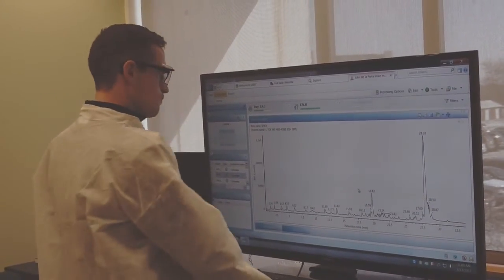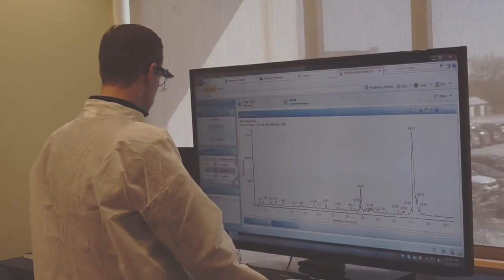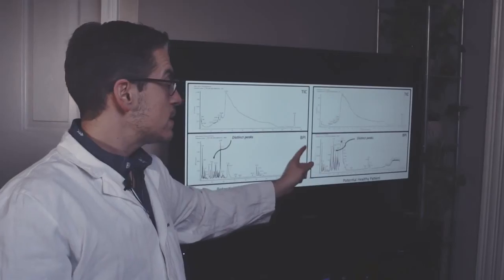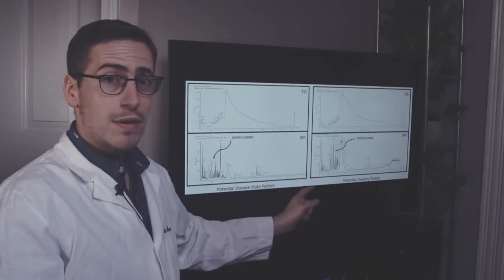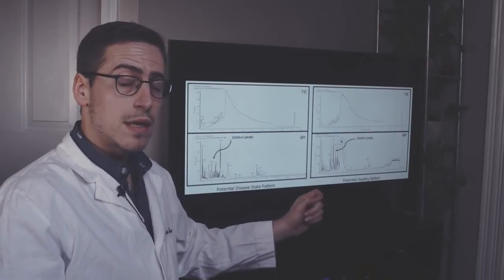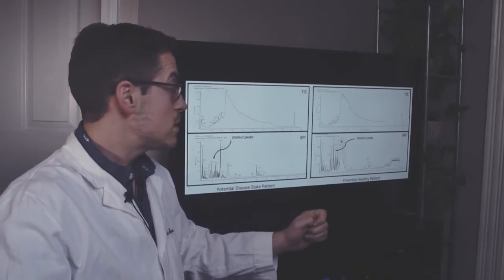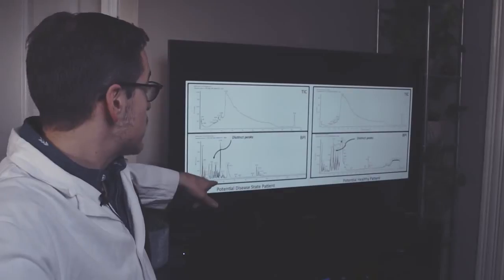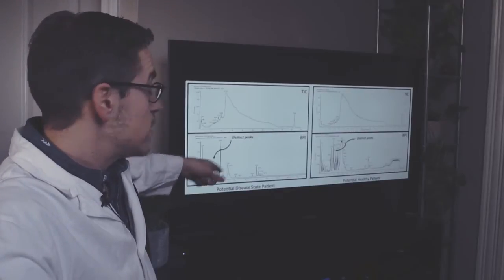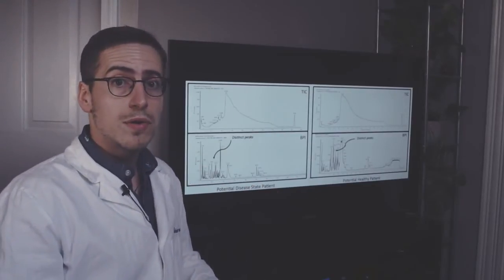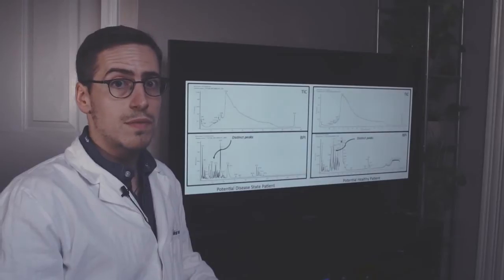We can get these types of profiles. You see on the right a potential healthy patient with distinct peaks. Each peak represents a protein at a particular level in the sample. On the left, we see a potential disease state patient. Each of these peaks represents different proteins or the same proteins with some modification.